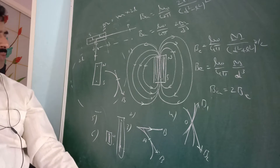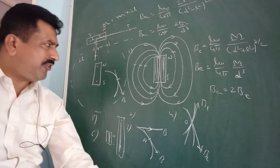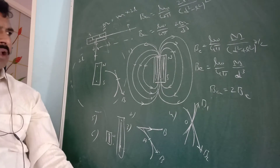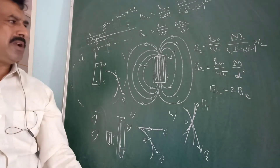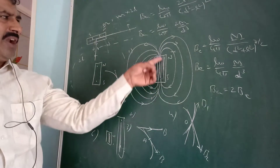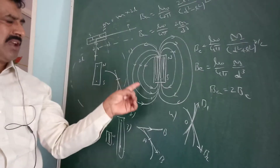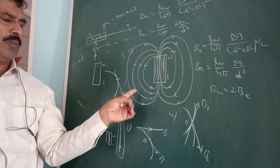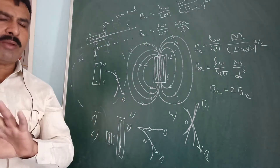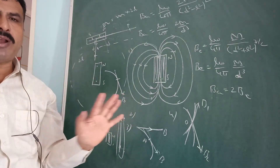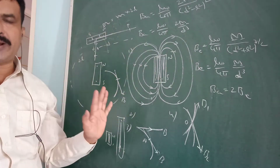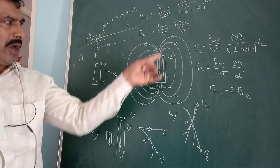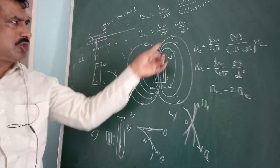These are the properties of magnetic field lines. The first property: magnetic field lines are continuous closed loops — they do not have any starting point or ending point.